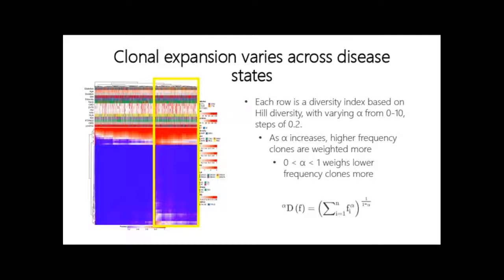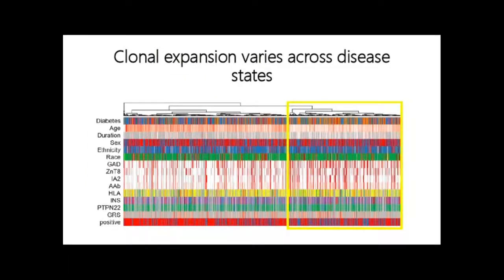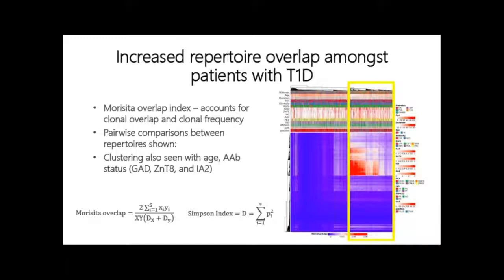At a global level, we wanted to look at differences between repertoires. We looked at diversity profiles, where each row in this heat map is one diversity metric, varying alpha from 0 to 10 in steps of 0.2, which weights higher frequency clones more or less. We see overall that all of these diversity indices show that the right cluster has higher diversity. Looking at the top row, the orange represents type 1s — and we see an enrichment of type 1s in this right cluster.